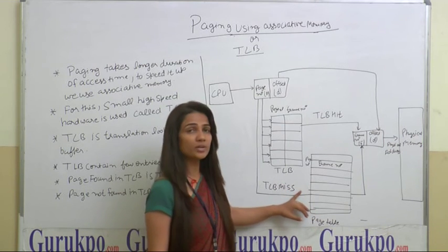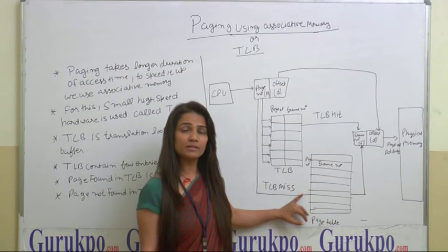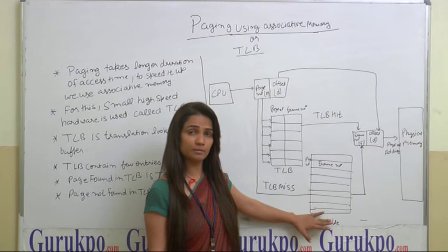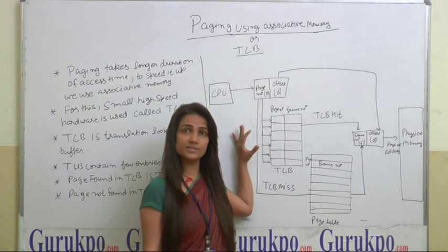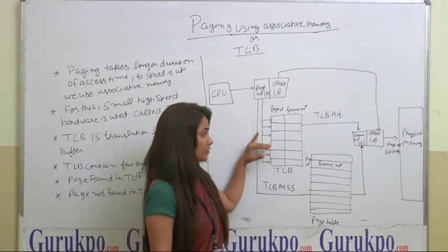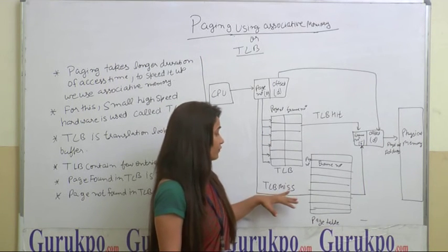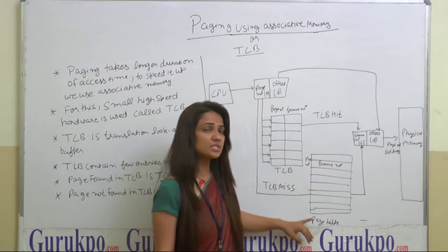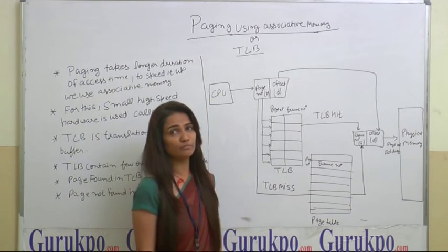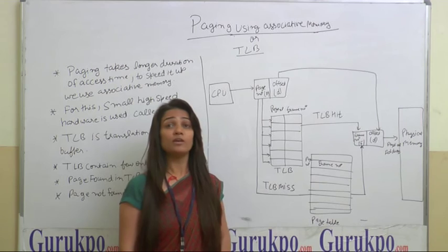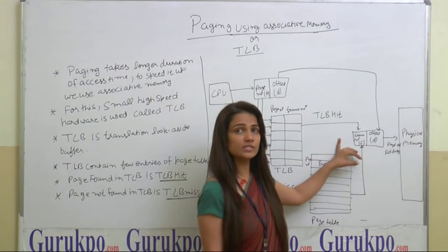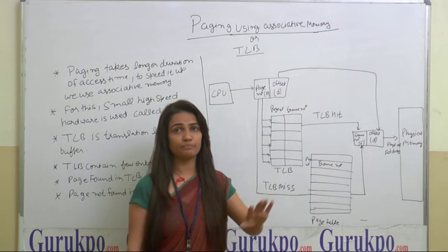If the page number is not found in TLB, it will be searched in the page table, and that is denoted as TLB miss. The entry found in the page table but not in TLB will also be stored in TLB. If there is a TLB miss, the page table will be used for generating the physical address, and if TLB is hit, we generate the physical address through TLB only.